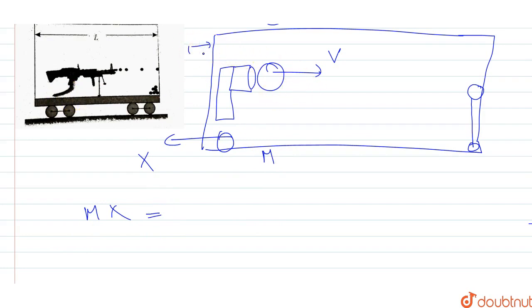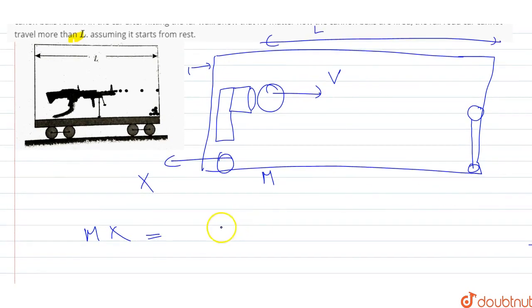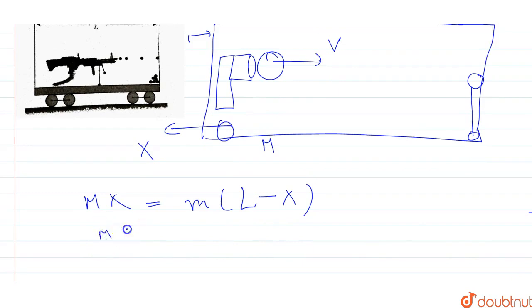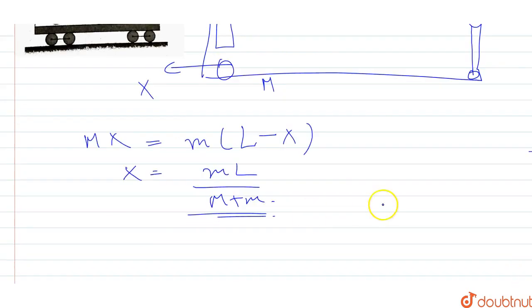So M times x equals the cannon ball has traveled m times L with respect to the car, and the car is moved with respect to the ground. If I put the maximum value of x, what is the maximum value of x? It's m L divided by M plus m. This is the maximum value of x. Since m divided by capital M is less than 1, then x is always less than L.